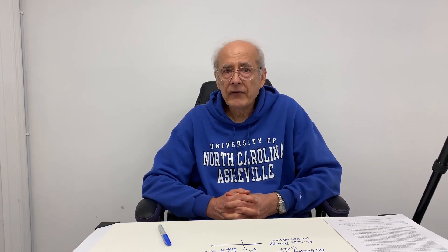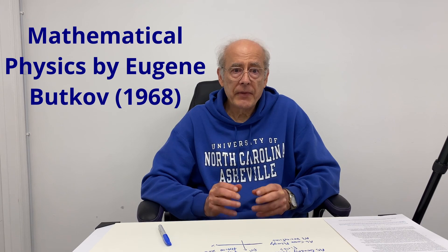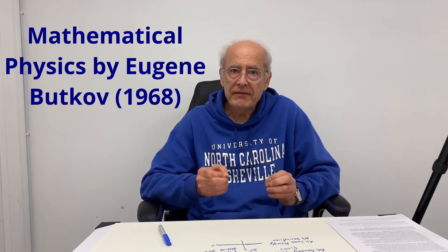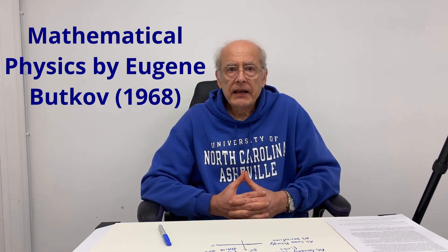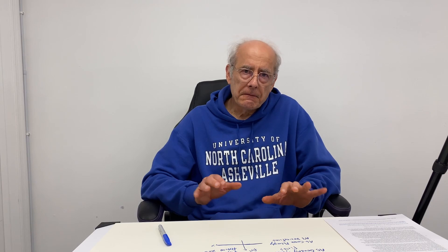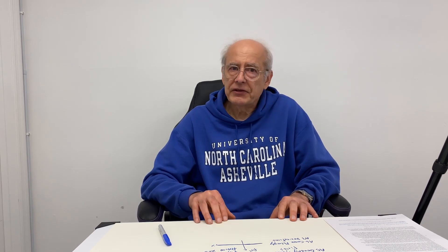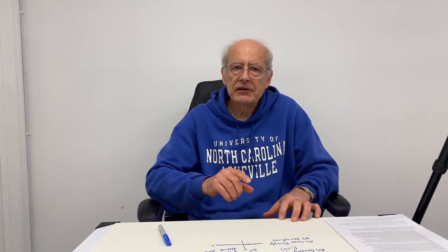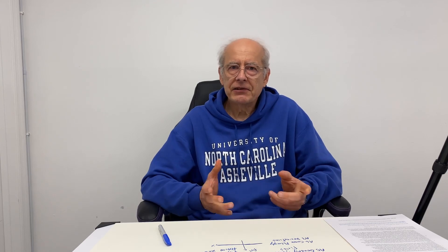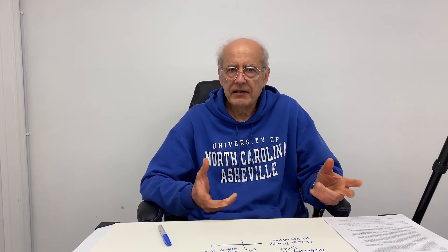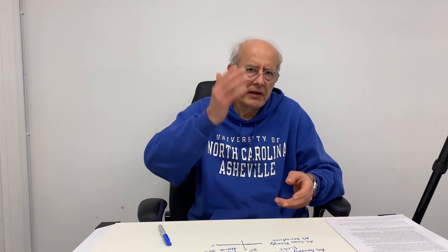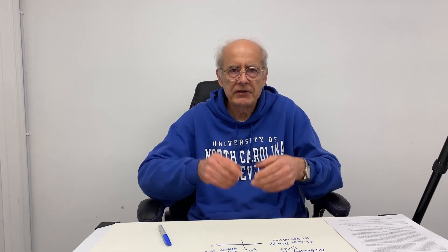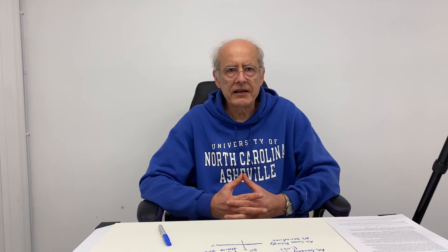I noticed that one of my math physics books had rich mathematics in it that a mathematician would be happy with. We don't use that kind of detail in our physics course, but I went to see the math professor with the book in hand. He said he didn't like the Dirac delta — all zeros and then infinity at x equals zero. That's not good.